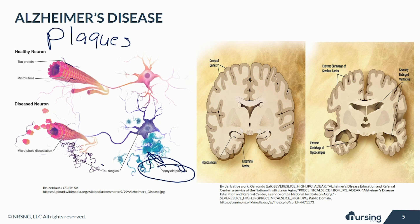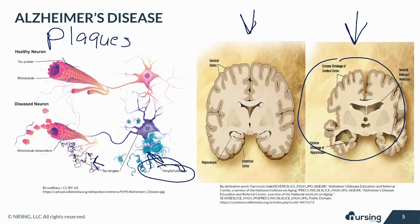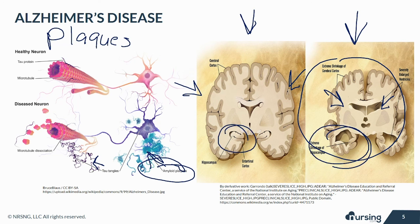When I talk about tangles in particular, I always think about my Christmas lights. So here I have a picture of a healthy brain and then also an Alzheimer's brain. The big thing to remember is that with Alzheimer's disease, the brain actually shrinks. You can see the differences between the two brains. The ventricles are huge on the healthy brain. The hippocampus and the cerebral cortex are both really shrunken. These are your ventricles, and this is your hippocampus in comparison to your hippocampus over here.